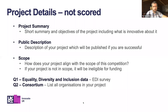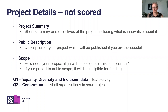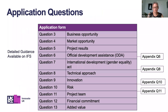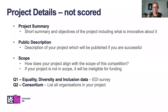For the Agri-Tech Catalyst Round 10 application, there's a project detail section which isn't scored. This includes a project summary where you highlight the challenge, approach, and innovation — setting the scene for assessors — and you need to briefly explain how your project is ODA eligible. You also need a public description that will be published online if successful, explaining how the project fits within the scope of the competition in terms of agriculture and food systems as well as ODA scope.